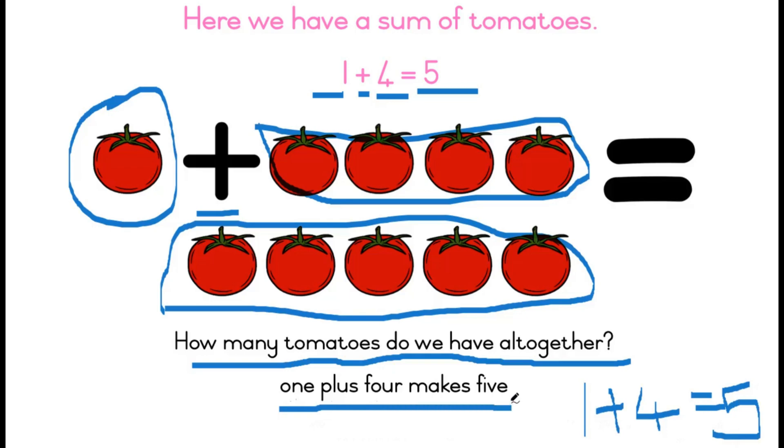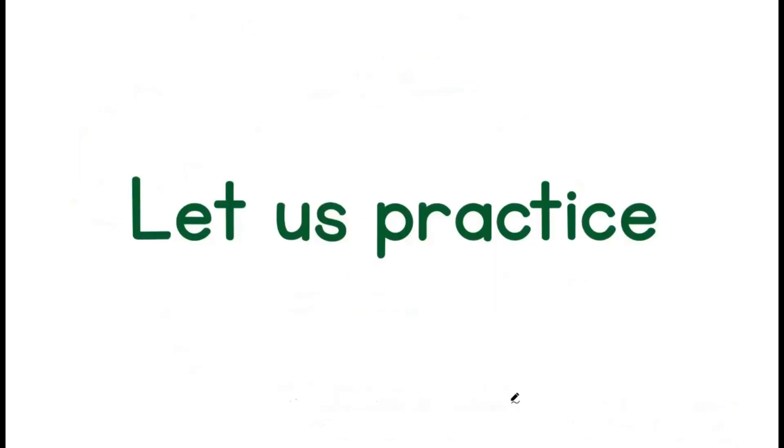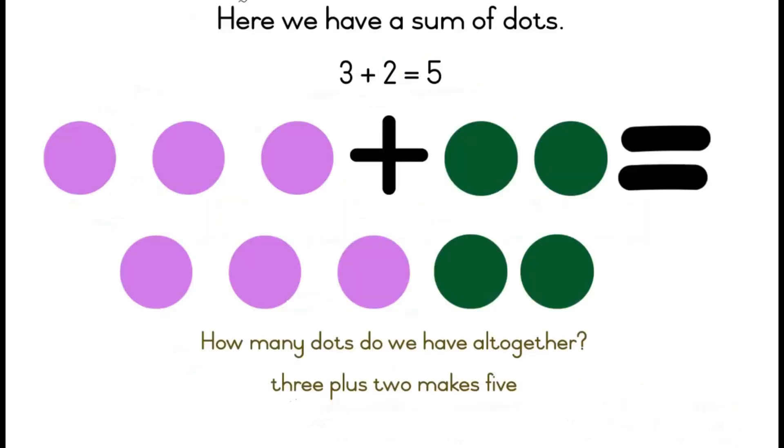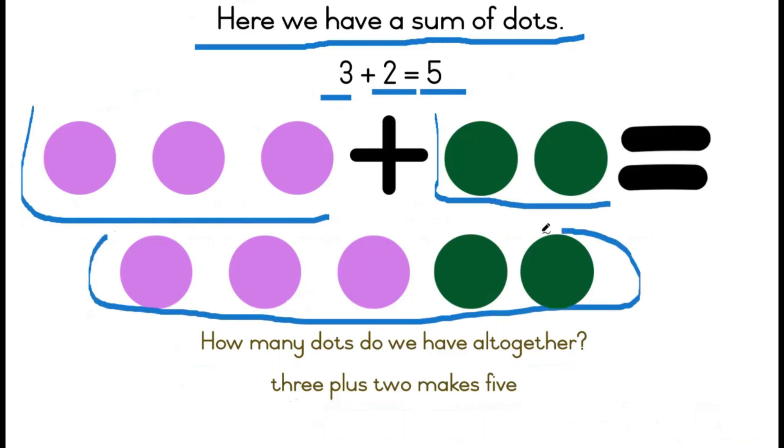Let's practice to understand a little more. Here we have a sum of dots. Three plus two equals five. We have three purple dots, two green dots, and that gives us five dots altogether.